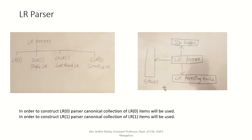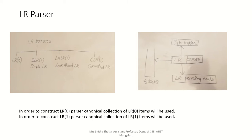To construct LR0 and SLR1 parsers, we need the canonical collection of LR0 items. To construct LALR and CLR parsers, we need the canonical collection of LR1 items. The two important functions for all LR parsers are closure and goto — just as LL1 used first and follow. Let's begin with LR0 parser and explain what an item, closure, and goto are.